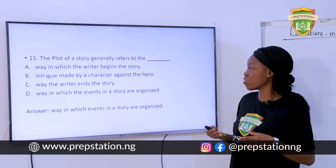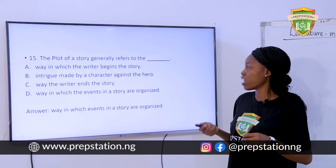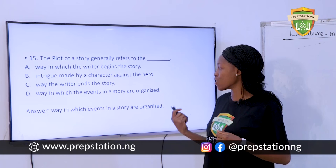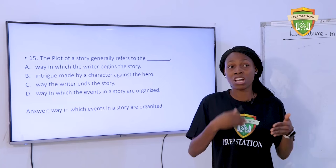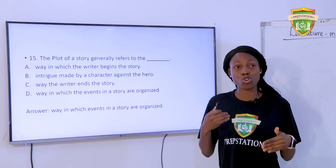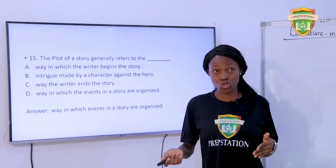Question 15: The plot of a story generally refers to — A. The way in which the writer begins the story. B. Intrigue made by the character against the hero. C. Where the character ends the story. D. The way in which the events in the story are organized. The answer is D. A simple definition of plot has to do with the sequence of events in a story — how events are organized, including the beginning, middle, and end.